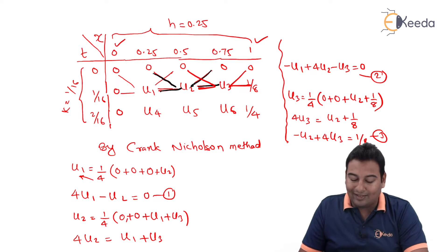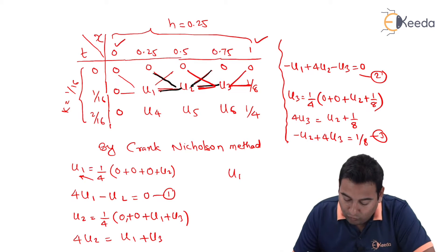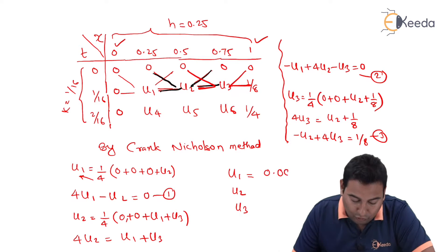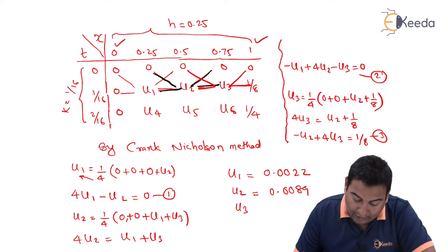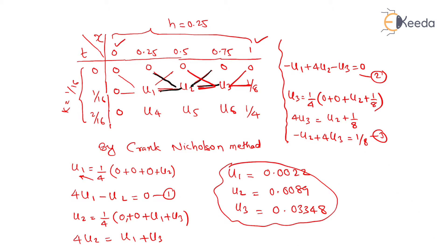If we put equations 1, 2, and 3 into the calculator, we will get the values: u1 = 0.0022, u2 = 0.0089, and u3 = 0.03348. We are done with the first step. Now we need to find u4, u5, and u6.